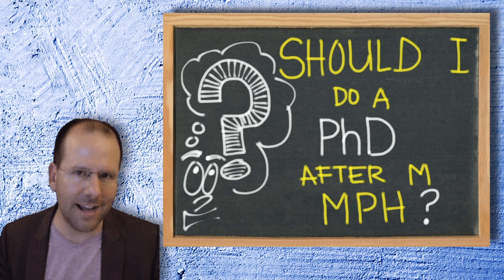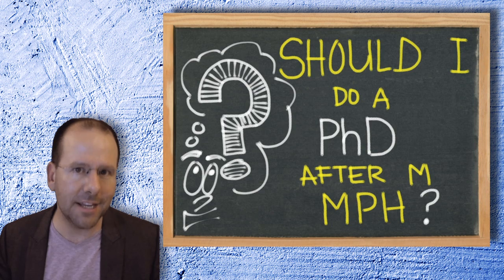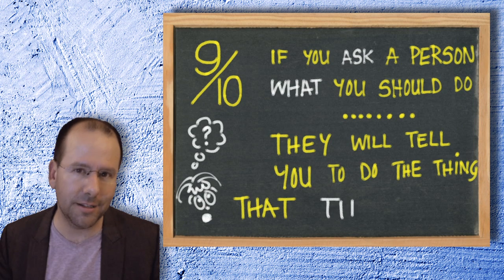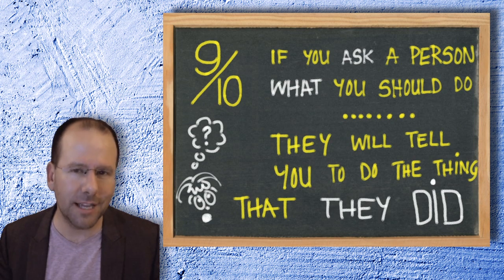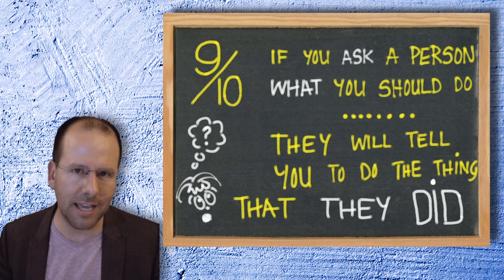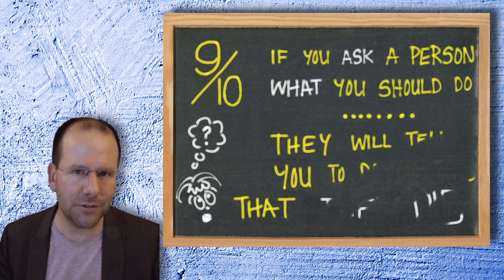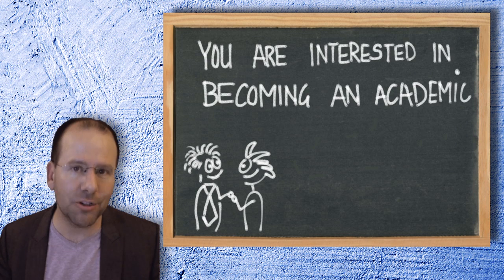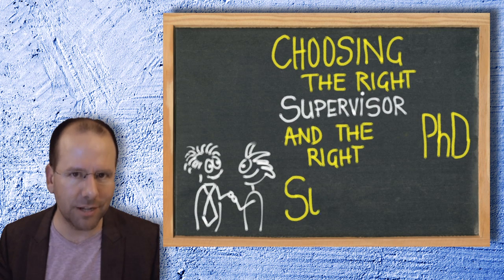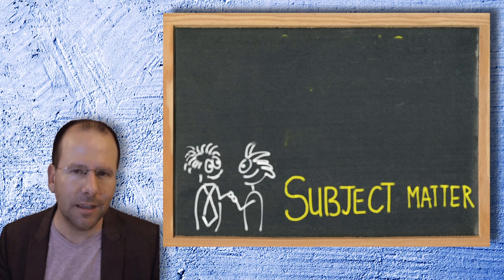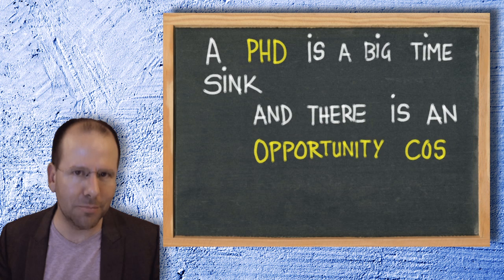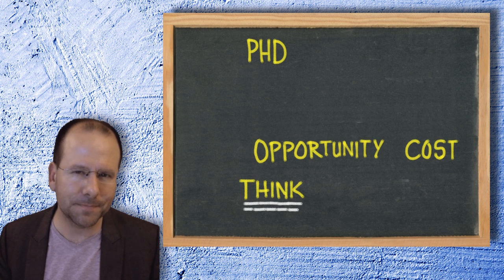And nine times out of ten, if you ask a person for advice as to what you should do, they're going to tell you to do the thing that they did. So take advice with respect to doing a PhD from lecturers and professors with a pinch of salt, unless it's the case that you are interested in becoming an academic, in which case you've got to do a PhD. And then it's about choosing the right supervisor in the right subject matter. If you're not going to go into academia, a PhD is a big time sink and there's an opportunity cost, so think about it very carefully.